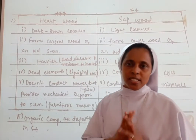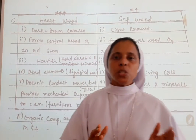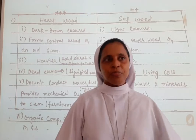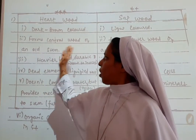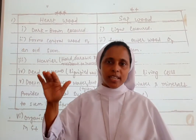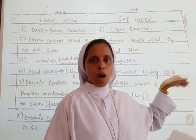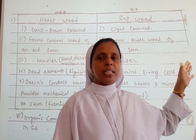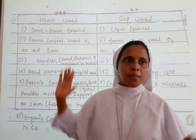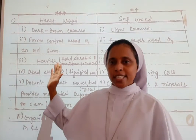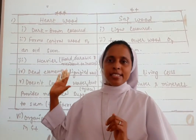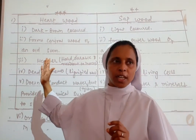Hardwood is dark brown in color while sapwood is of light color. Hardwood forms the central wood of an old stem, while sapwood is the outer wood of an old stem. Sapwood is lighter, whereas heartwood is heavier, hard, durable, and resistant towards insects.